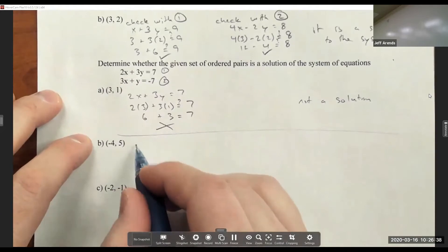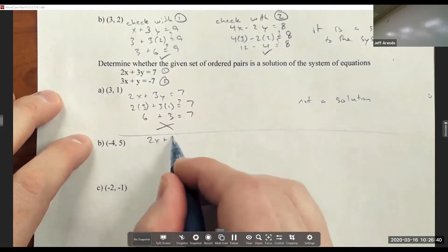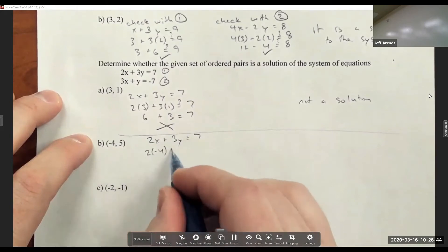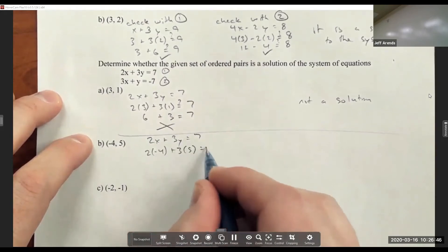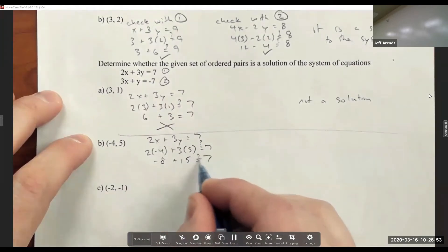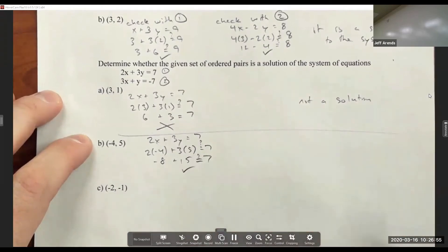Let's check this one. 2x plus 3y equals 7 becomes 2 times negative 4 plus 3 times 5 equals 7. It's negative 8. This is a question mark. Plus 15 question mark equals 7. And that's a true statement. So that one works out.